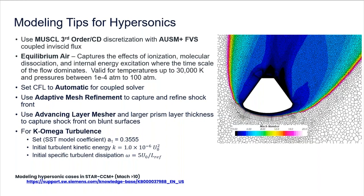We do recommend using automatic CFL — it's a whole lot easier to use, fewer knobs, and generally does a good job. And as I mentioned earlier, we use the advancing layer mesher to grow out the prism layer.